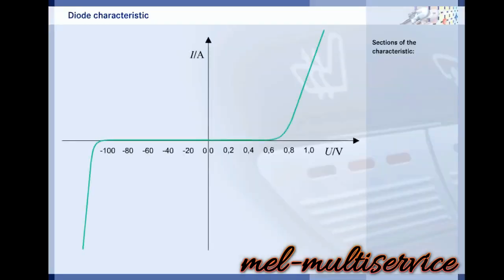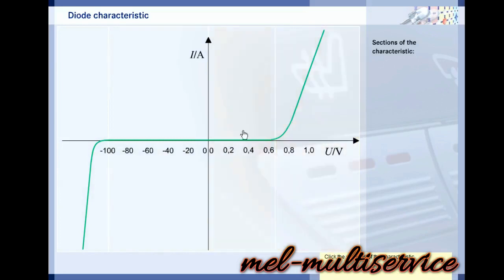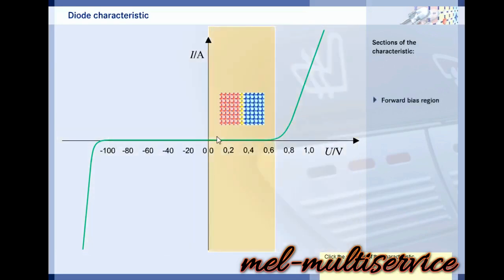The diode characteristic shows the flow of current through the diode in relation to the externally applied voltage. It summarizes the effects on the depletion region. Note that the reverse bias part of the characteristic is 100 times condensed so that it fits on the page. At low forward voltages, no current flows. The external voltage is still too low to completely eliminate the depletion region.